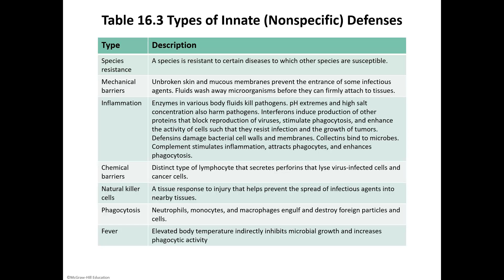My favorite cell in the whole body is called a natural killer cell. The natural killer cell — they should have made a movie about this one. The natural killer cell is a tissue response to injury that prevents the spread of infectious agents to nearby tissues. Phagocytosis involves three kinds of cells that can phagocytize — meaning those cells can eat or destroy harmful agents and pathogens. Those three types of cells are neutrophils, monocytes, and macrophages.